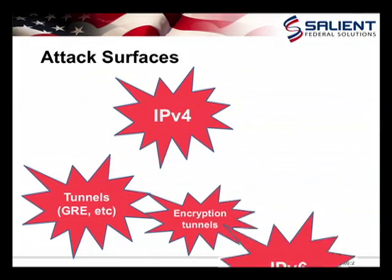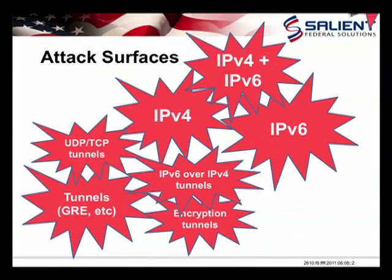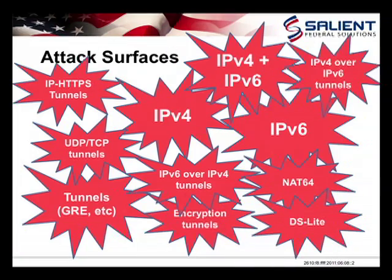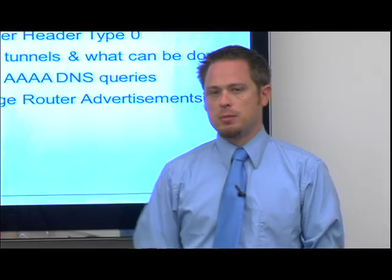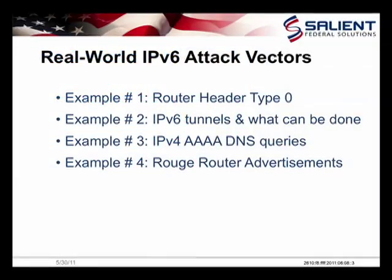In both IPv4 and IPv6, there's a huge attack surface, especially with a lot of the things we're going to talk about here. What I really want to focus on is a lot of the IPv6 and UDP-based specific attack vectors. I want to talk about four examples: the first being router header type 0, which covers a lot of the extension header-based vulnerabilities. The second is IPv6 tunnels and a lot of what can be done with them.